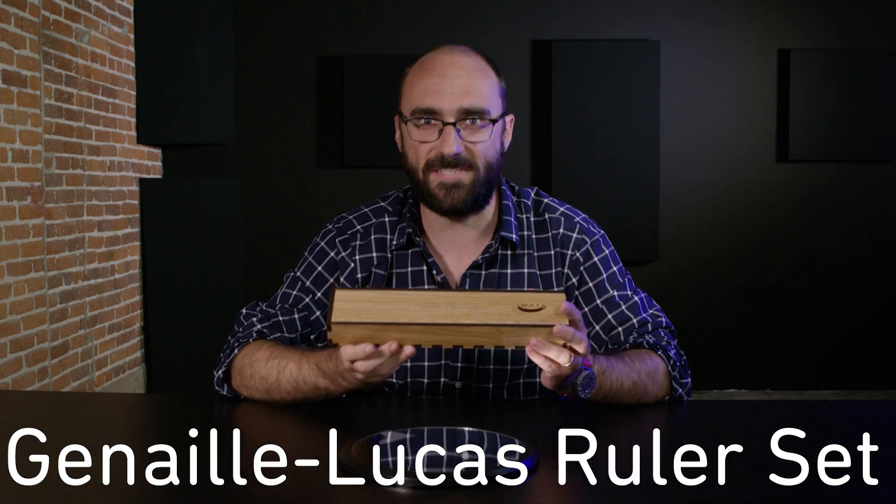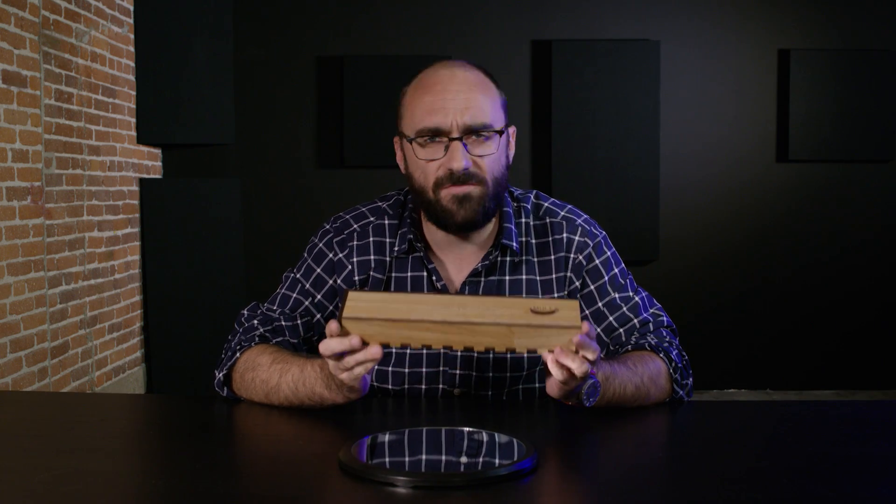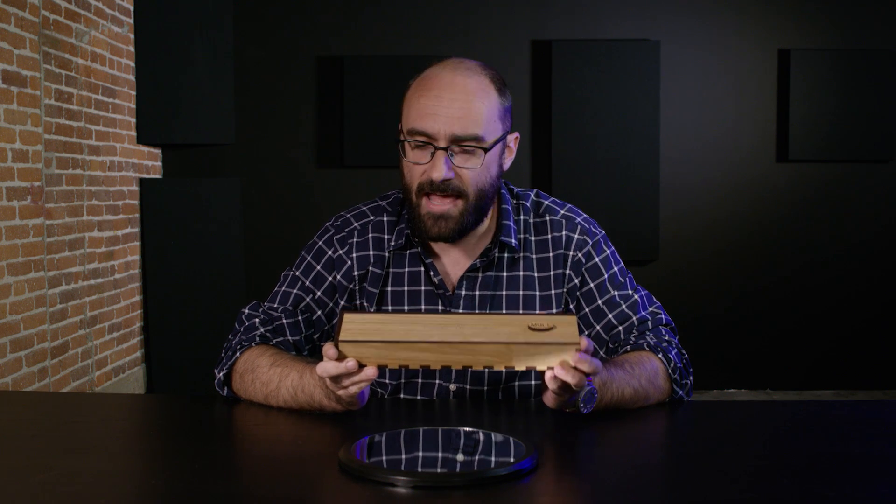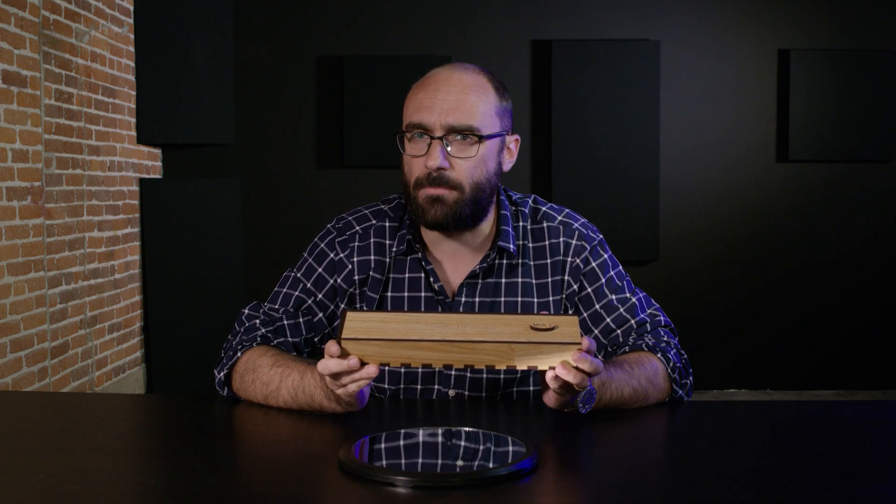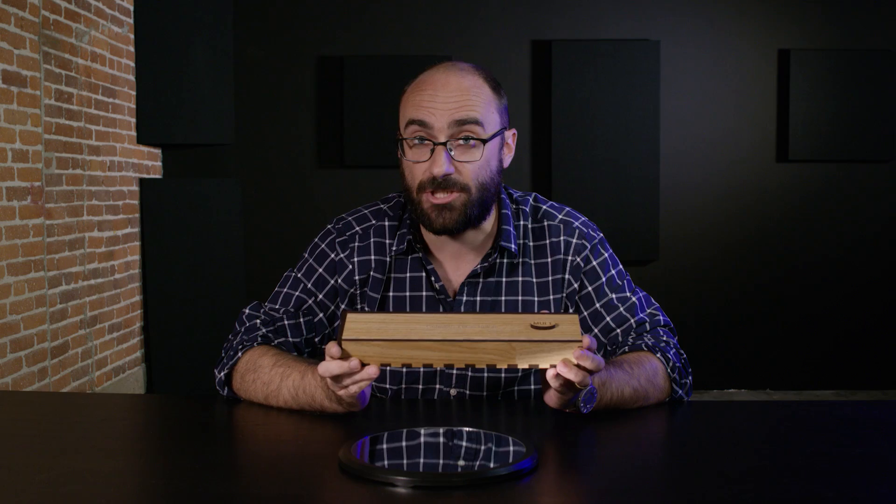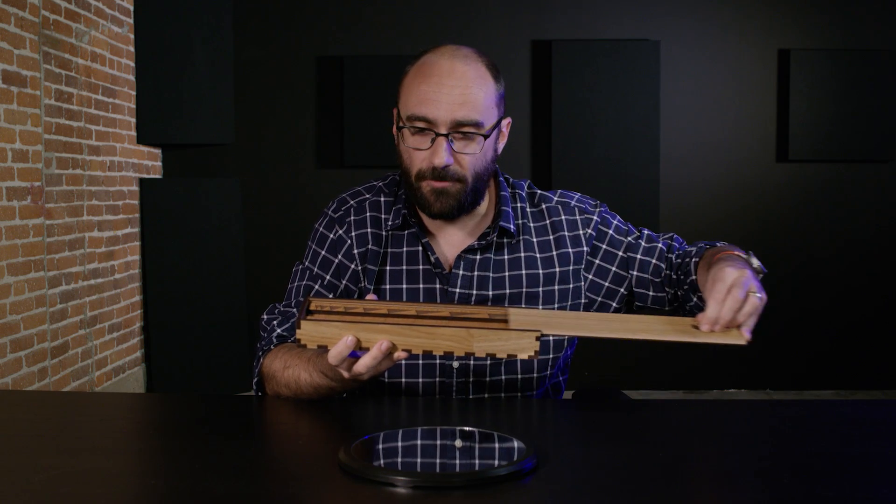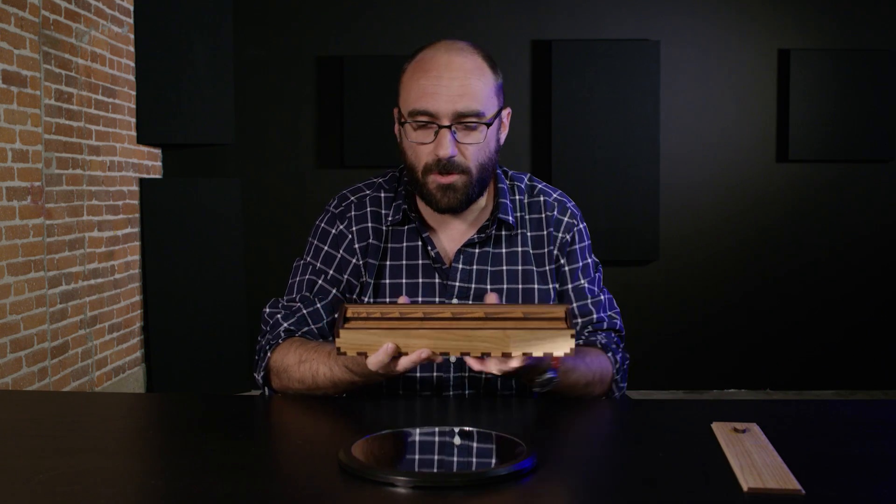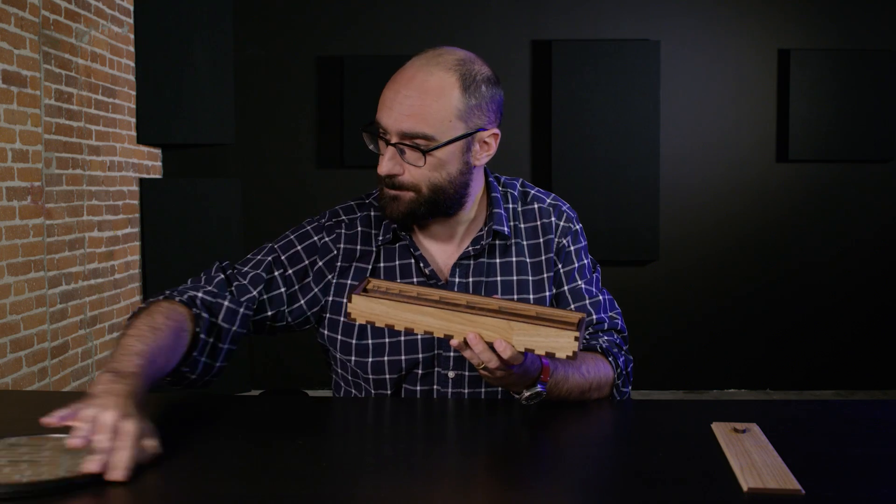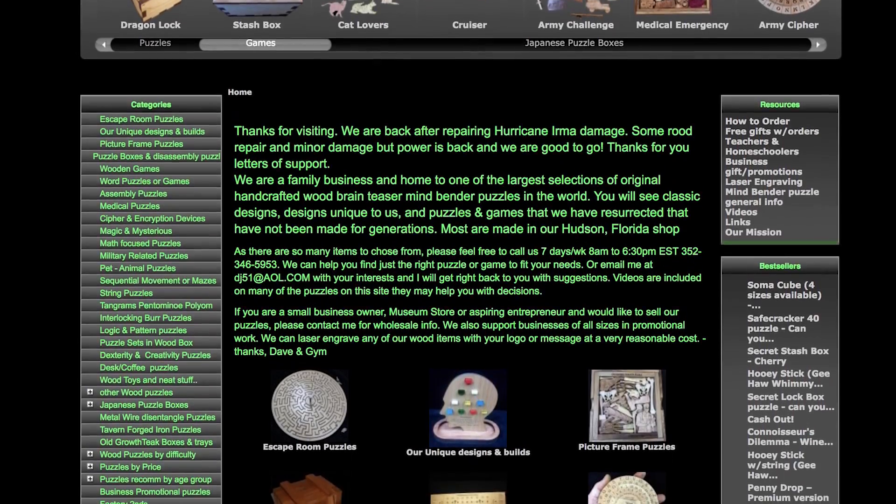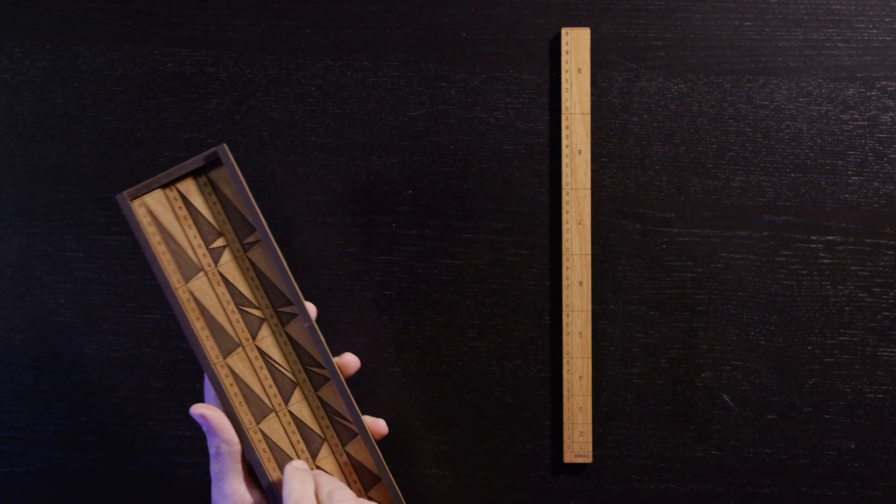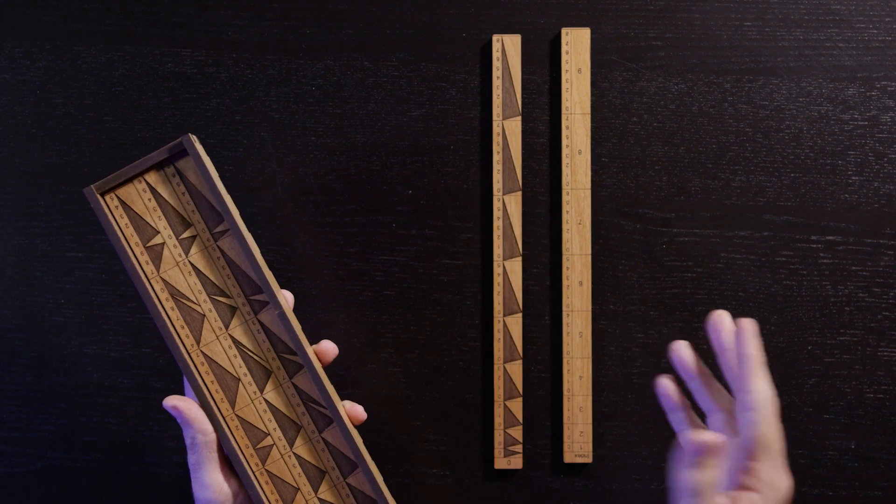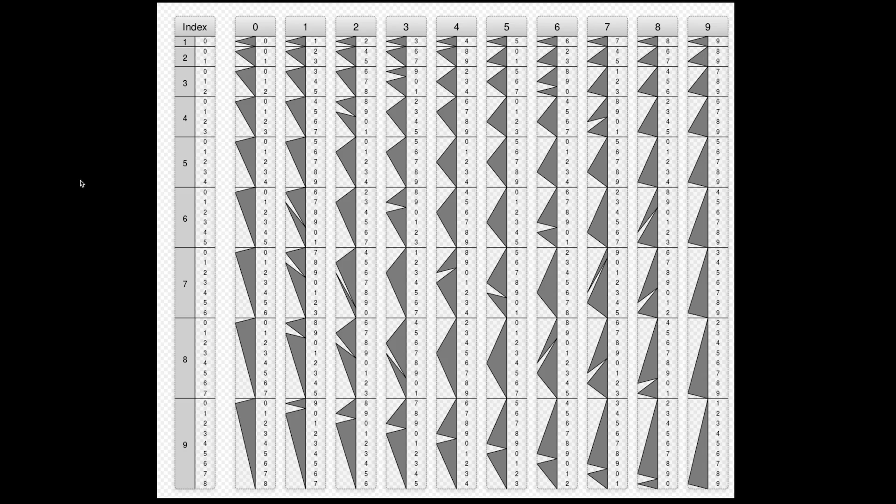And I really want you to see this toy. It's called a Genaille-Lucas ruler set. They are beautiful. They were invented in 1891 as a way of multiplying numbers without having to do a lot of mental calculation. Look at how beautiful they are.